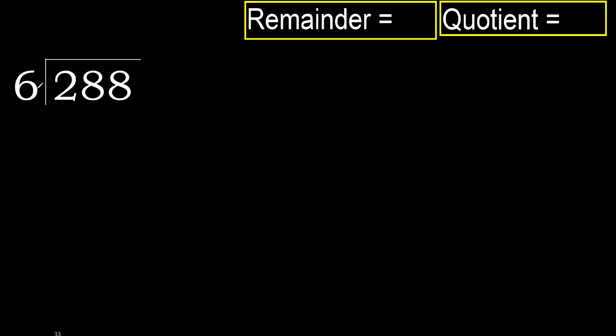288 divided by 6. 2 is less than 6, so we move to the next digit. 28 is not less, so with 28, we find which number multiplied by 6 is nearest to 28 but not greater.